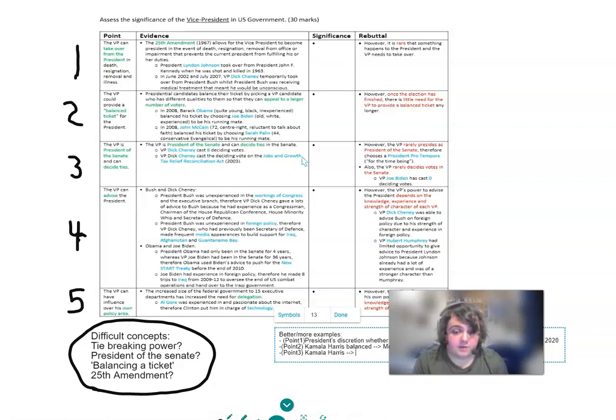But again we want to go more modern than that, and we want to look at what's happened in recent years. Kamala Harris has actually used her tie-breaking power 26 times because of a 50-50 Senate between 2020 and 2022, and she also cast a deciding vote on the Inflation Reduction Act, which was last year, which is really important legislation for Joe Biden.